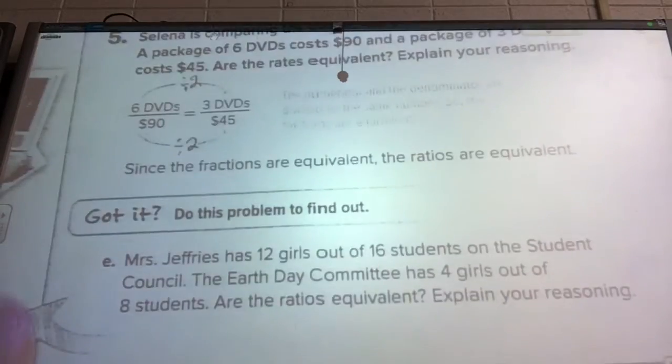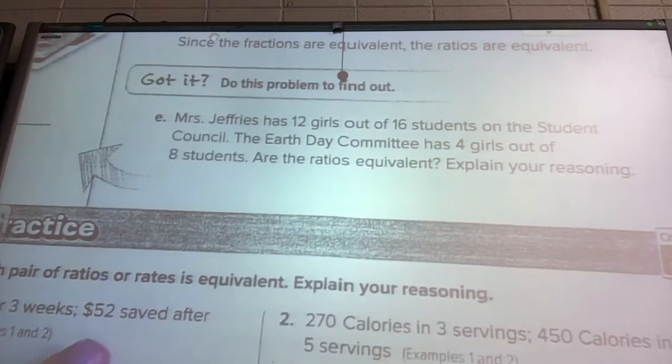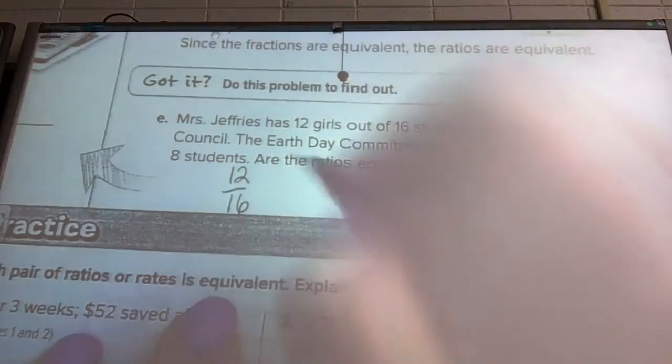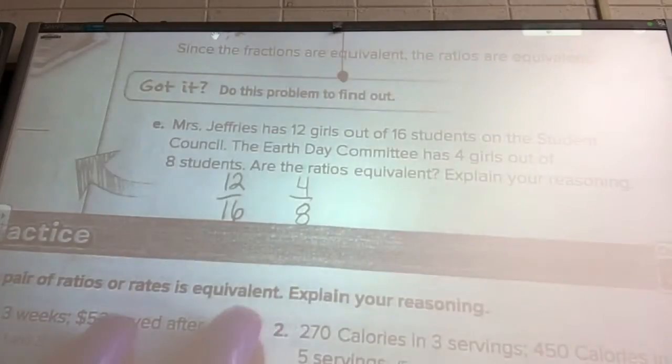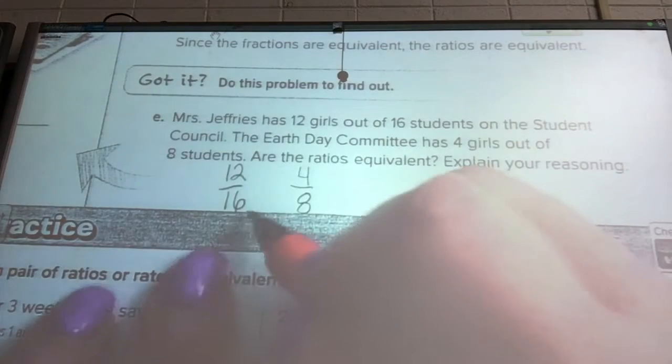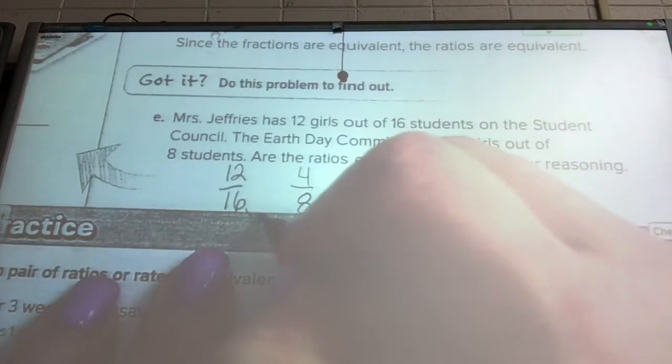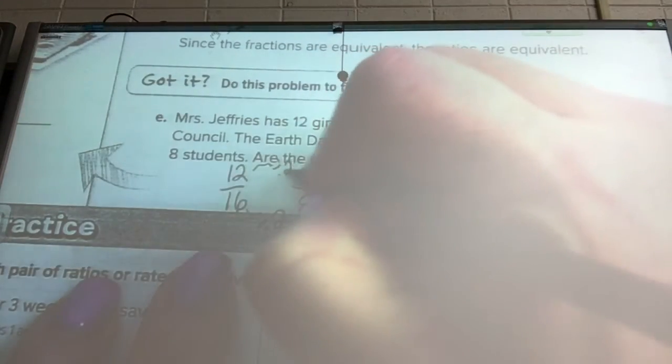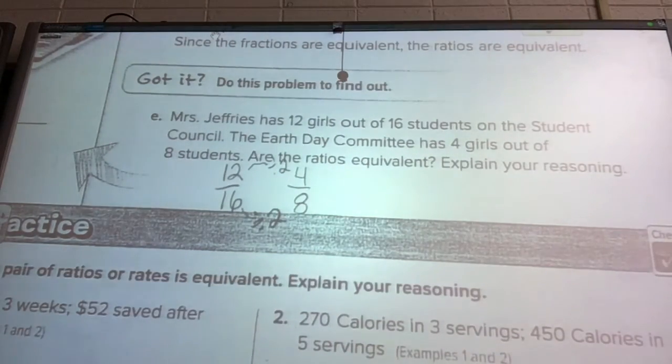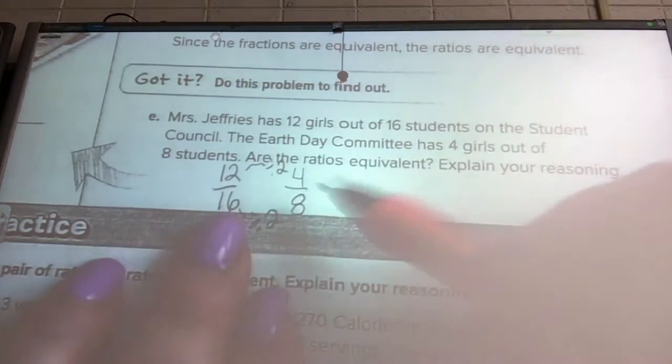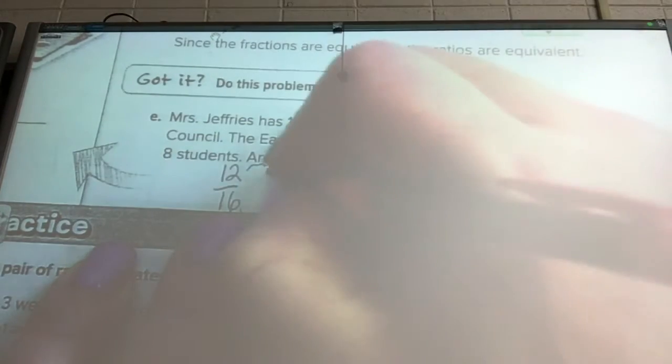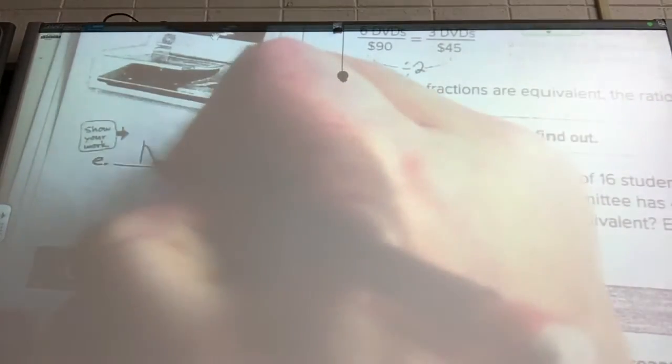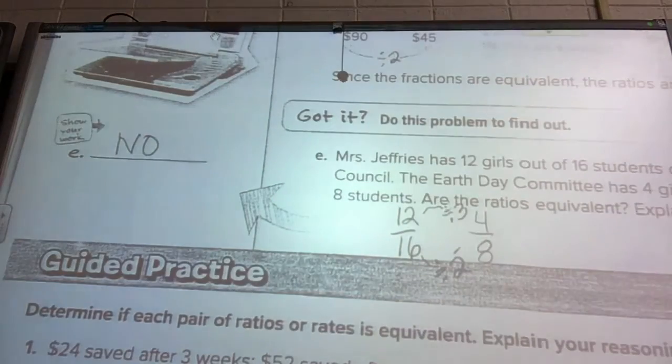Let's try this got it problem. Ms. Jeffries had 12 girls out of 16 students on the student council, so 12 out of 16. The Earth Day committee has 4 out of 8, 4 girls out of 8 students. Are they equivalent? First, how do we get from 16 to 8? We would divide by 2. So what we do on the bottom, we have to do on the top. If we did 12 divided by 2, would we get 4? We would get 6. To get 4, we would have to divide by 3. So are these equivalent? No, they're not. If you can't do the same on the top and bottom, then it is a big no.